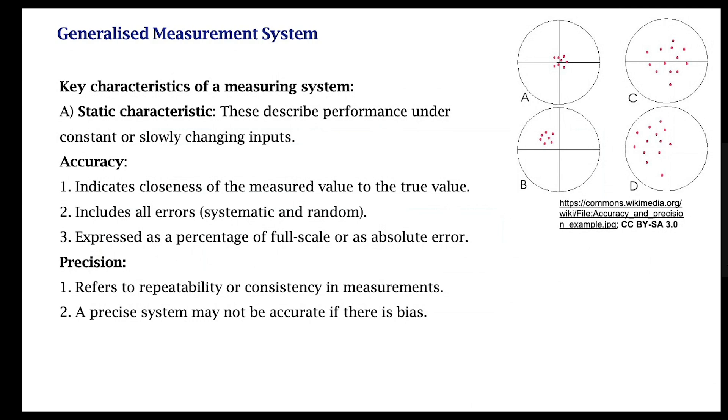The first is static characteristics. This is the situation in which the input changes relatively slowly, and you are interested in measuring the performance of the system when the measured quantities change slowly or are constant. A critical static characteristic, for example, is accuracy. What is this accuracy? Accuracy is essentially a measure of how close your measured variable or your measured value is to the true value. First of all, you don't know what the true value is. Your aim is to have your measured value as close as possible to the true value.